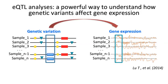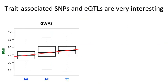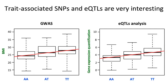The QTL analysis is a powerful way to understand how genetic variants affect gene expression. We can see the QTL analysis like GWAS, where the phenotype in this case is the gene expression quantification. An eQTL is a SNP which affects gene expression. Typically, when we perform GWAS and identify a SNP affecting the phenotype, the first thing we do is check if the same SNP is also an eQTL for a certain gene, because this can help us to biologically interpret our statistical association.